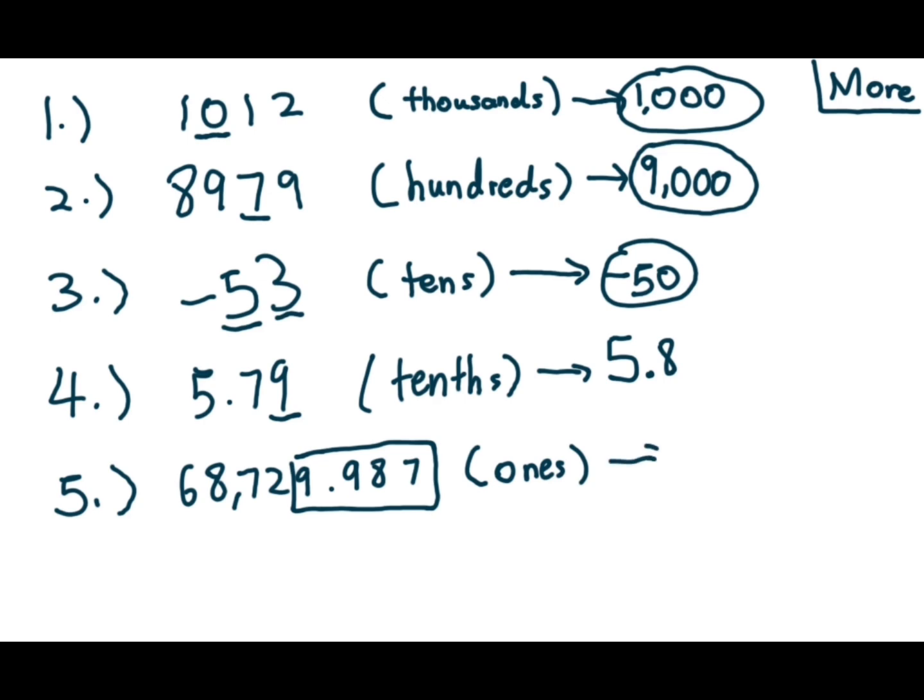Looking back, we are trying to round to the ones place. 9 is greater than 5. So therefore, we are rounding up. But, similar to the second problem, this problem is also adding another 10. 9 becomes a whole number. So, the total answer is 68,730.